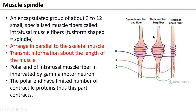The muscle spindle contains a dynamic nuclear bag fiber, a static nuclear bag fiber, and a nuclear chain fiber. The nuclear bag fibers detect the length and velocity of muscle fiber contraction. The nuclear chain fiber — where nuclei are arranged in a line — detects information regarding the length of the muscle fiber.